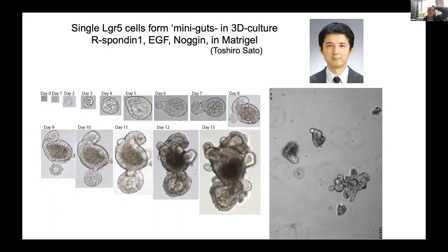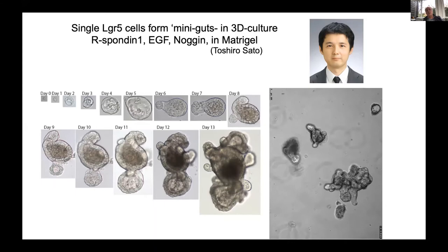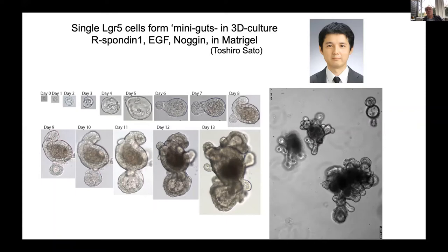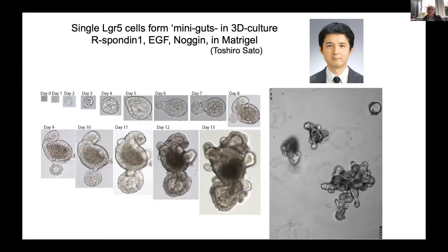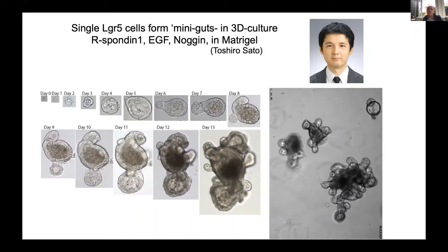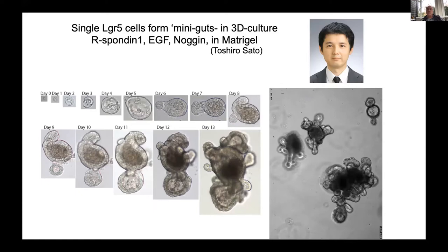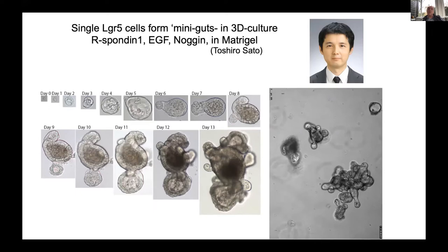Based on this, we set out to see if we could mimic the conditions in a crypt. This was done by Toshiro Sato. We had learned the rules of what drives crypt proliferation: three main factors — Wnt (we used R-spondin, which is a Wnt amplifier and the ligand of the LGR5 receptor), a tyrosine kinase receptor ligand such as EGF, and a BMP inhibitor — we used the recombinant protein Noggin. Three recombinant proteins, no serum, in Matrigel. The intention was to take one stem cell and produce many stem cells, but instead, these structures — which we now call organoids — formed: 3D phenocopies of the small intestinal epithelium.